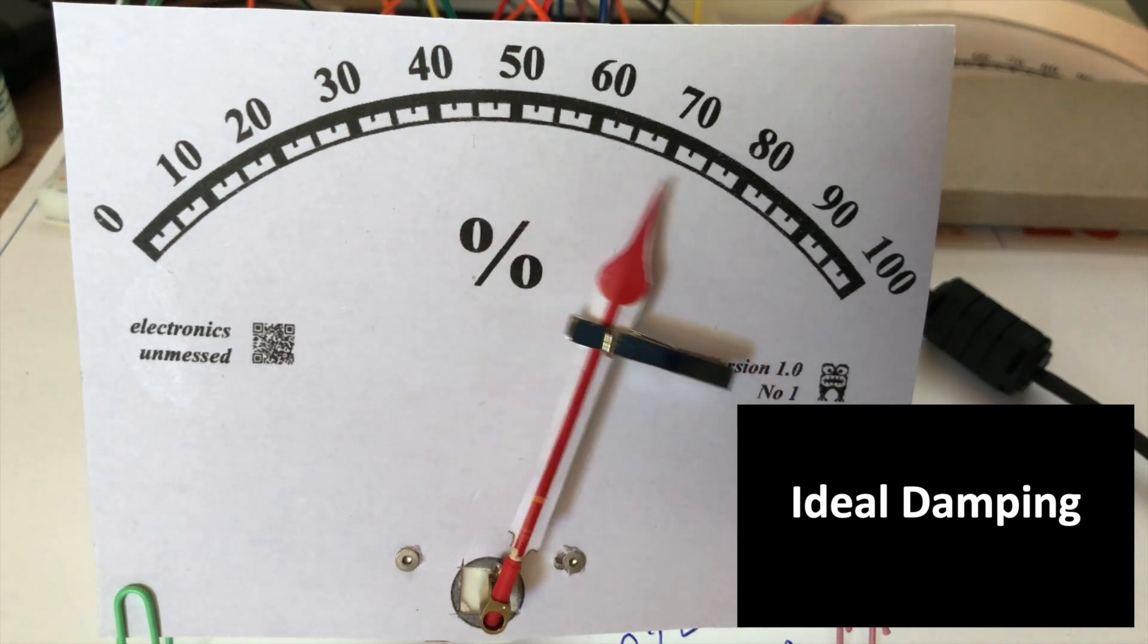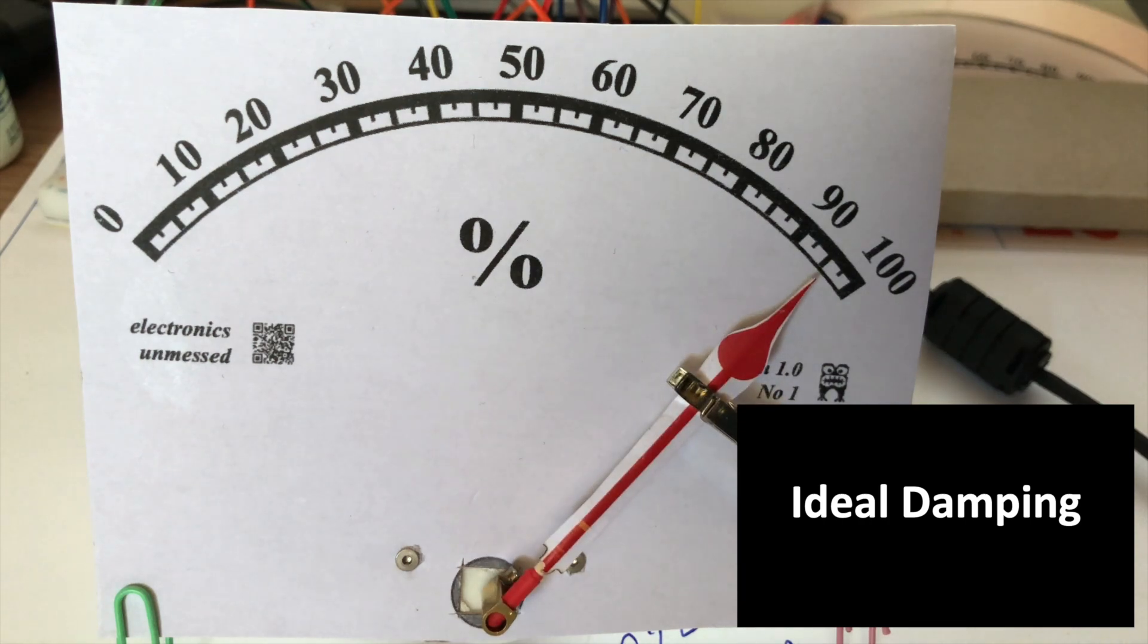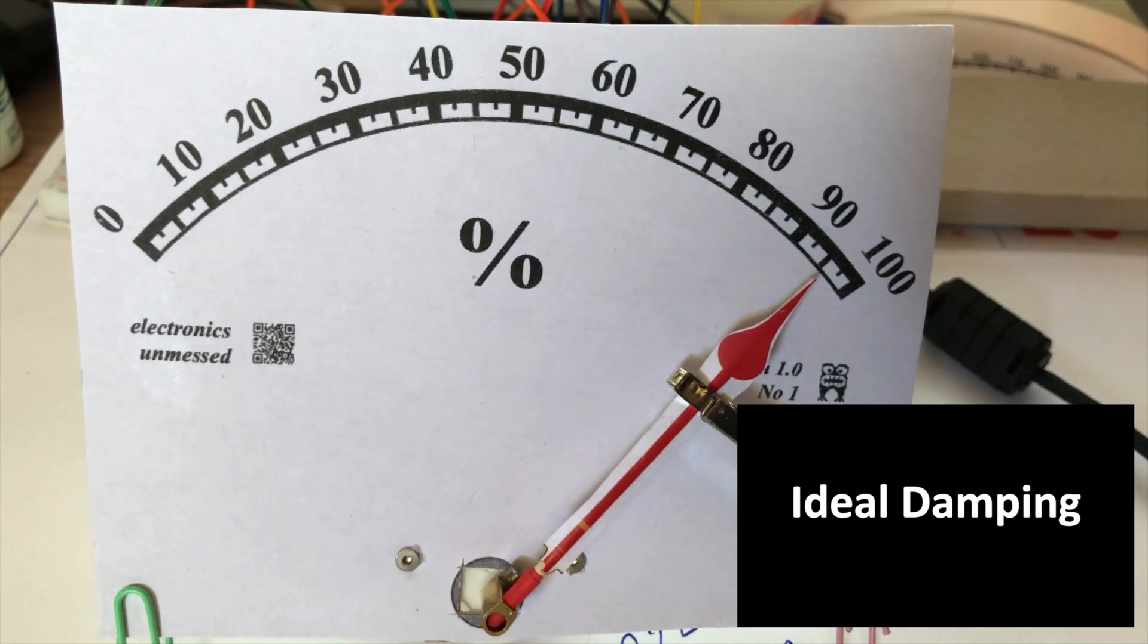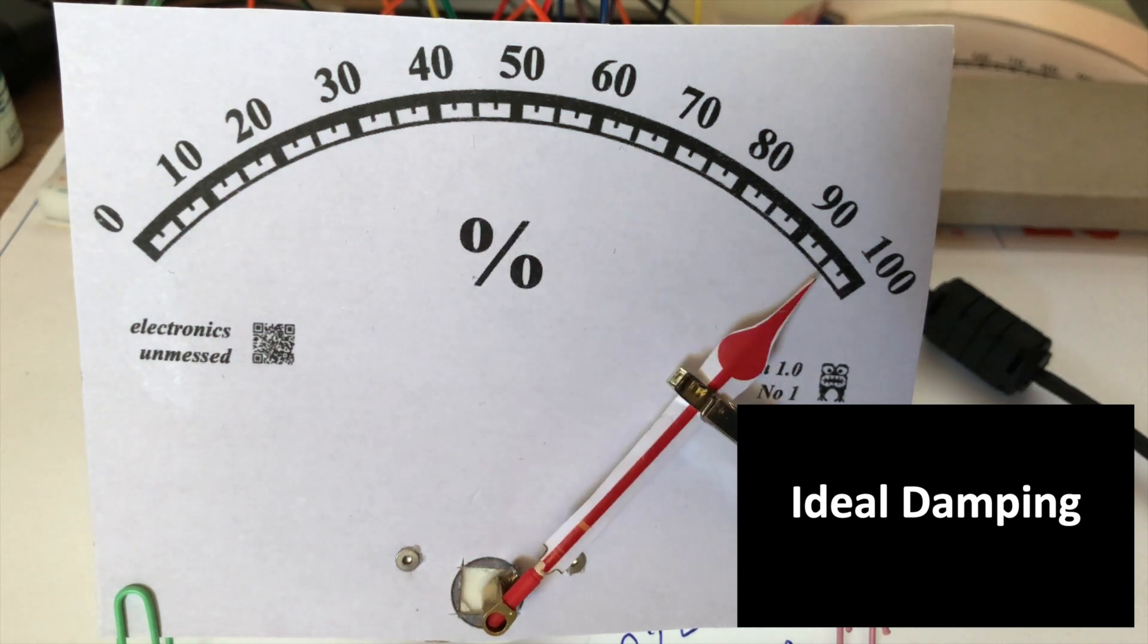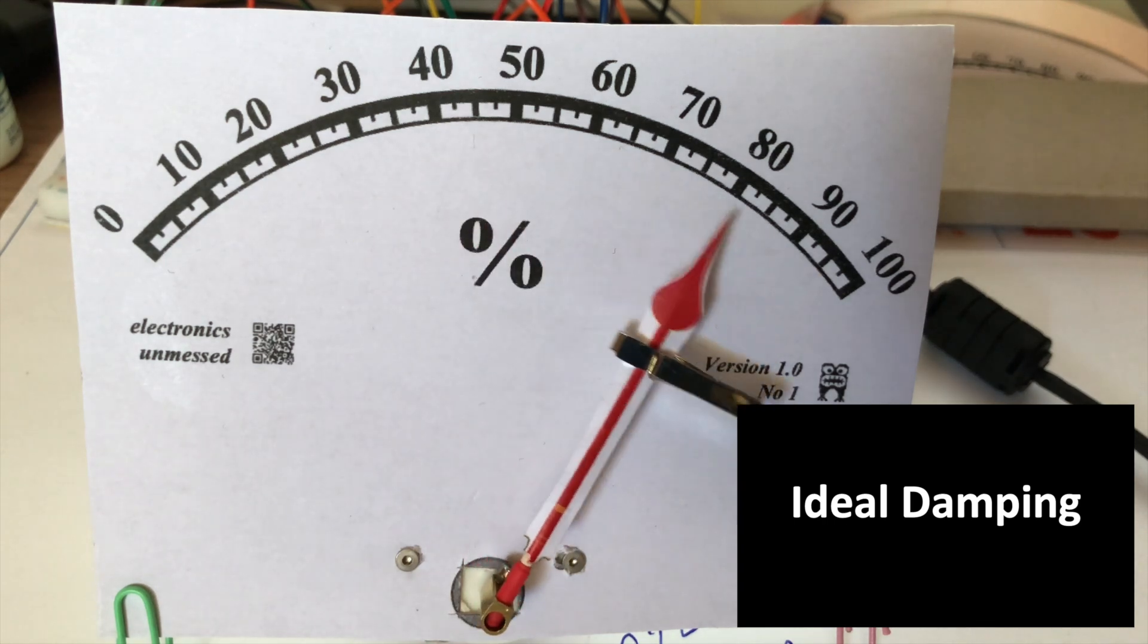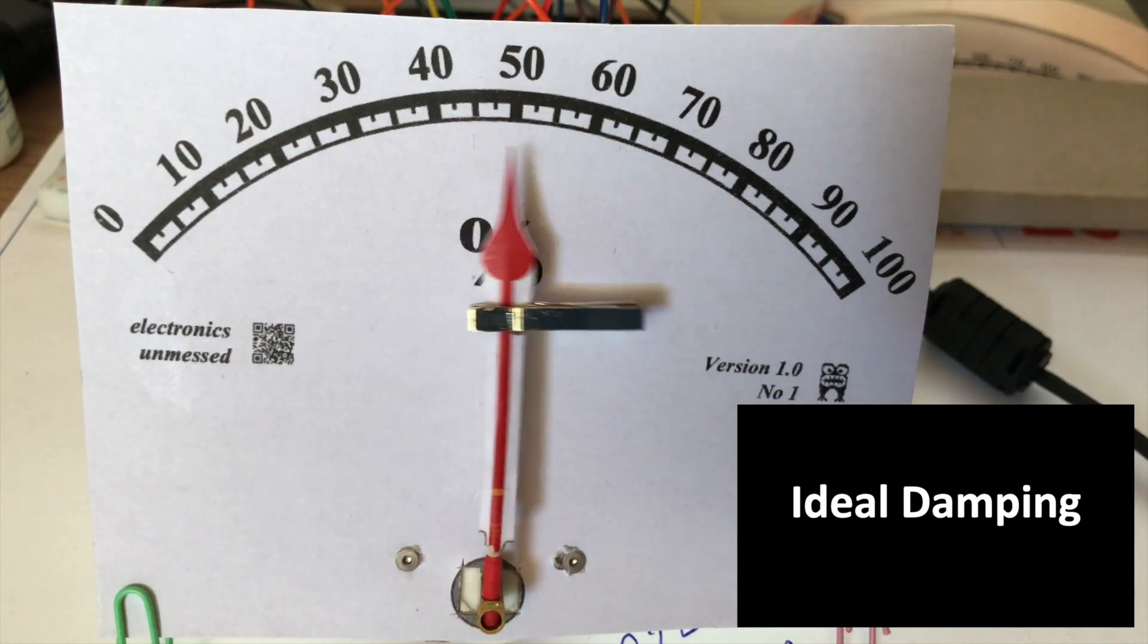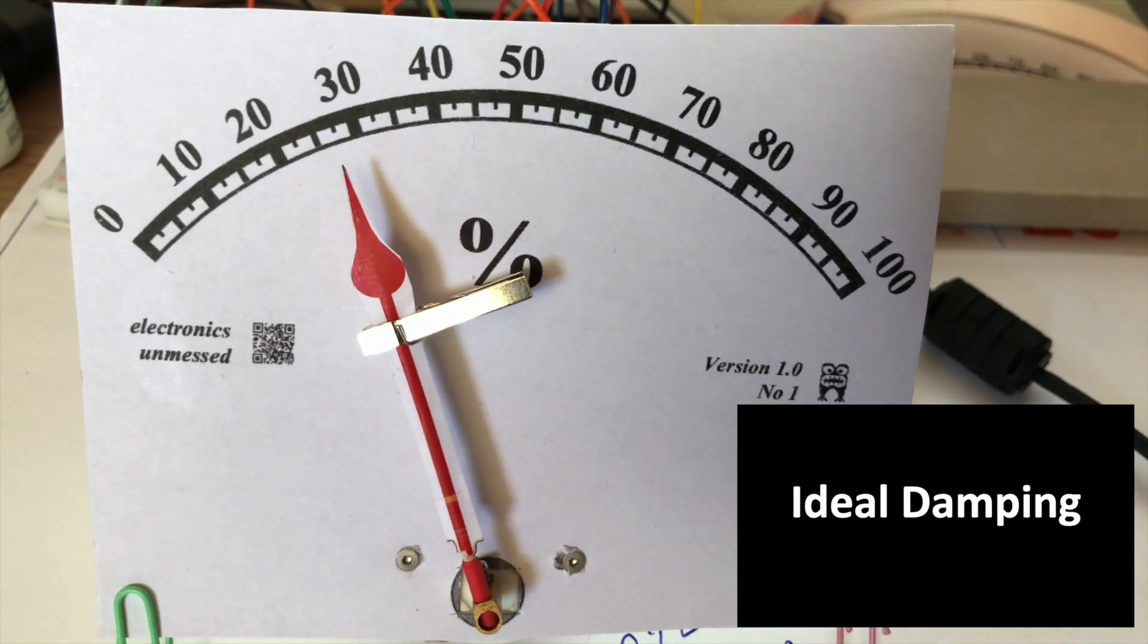We will discuss more about the display instrument in later videos. As I said, we can adjust the damping and also the resonance frequency via potentiometers. With that, the Arduino controller can be used universally. We can create large or small gauges, because we can adjust the resonant frequency and damping of the pointer accordingly.